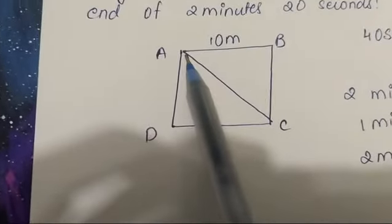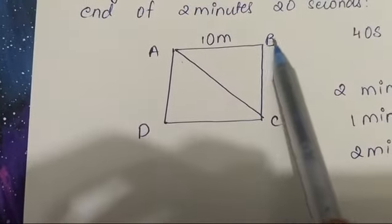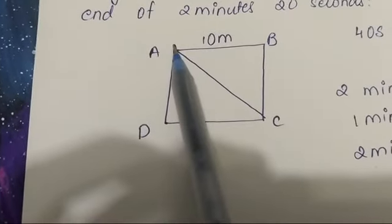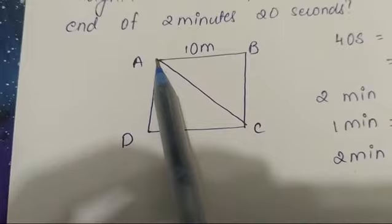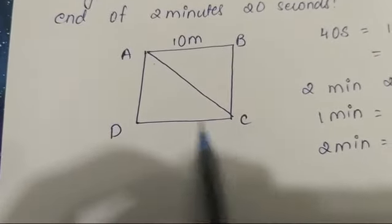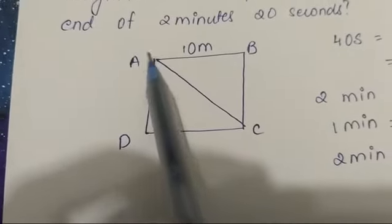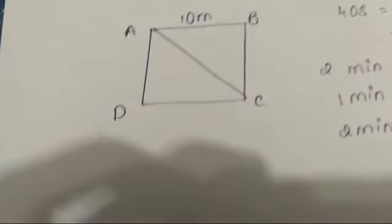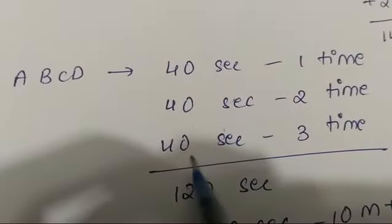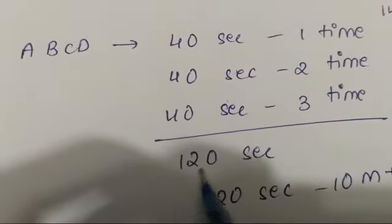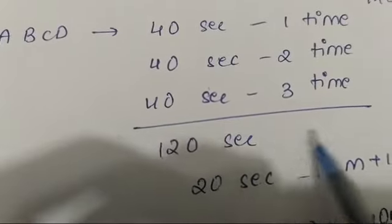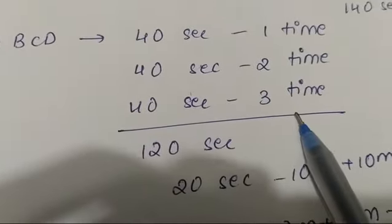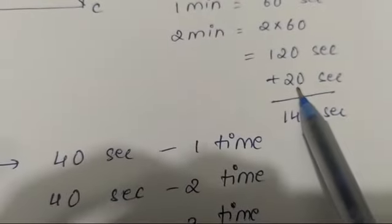He started from A, so in 40 seconds he came back here after one loop. In another 40 seconds, one more loop, second time. In another 40 seconds, one more loop, third time. So total, in 40 seconds one time, 40 seconds two times, 40 seconds three times, meaning in 120 seconds he completed how many loops of the field? Three loops.